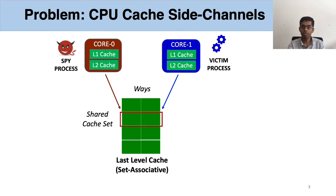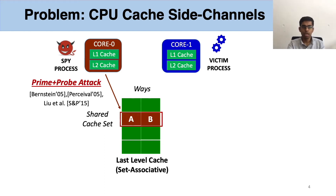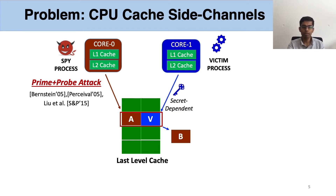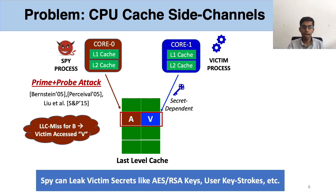Addresses that map to such shared sets can evict each other from the cache. The classic prime-and-probe attack exploits sharing of cache sets by first having a spy fill a cache set with its addresses, allowing a victim to execute and evict one of the spy's addresses. The spy, by observing a miss for its address, can infer that the victim accessed that cache set. If the address accessed by the victim was dependent on a secret, the spy can also infer the secret.